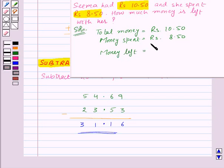So, we will subtract rupees 8.50 from rupees 10.50. Here we get rupees 2. That means money left with Seema is rupees 2.